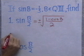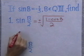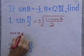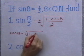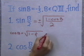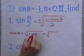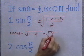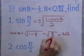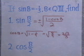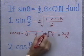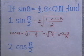If sine b is negative one-third, cosine b is going to be the square root of 1 minus sine squared b. That's 1 minus negative one-third squared, which is 1 ninth. That's the square root of 9 ninths minus 1 ninth, which is 8 ninths. The square root of 8 is 2 square root 2, and the square root of 9 is 3. Now, if b belongs to quadrant 3, the cosine is going to be negative, so I need to put a negative sign in front.